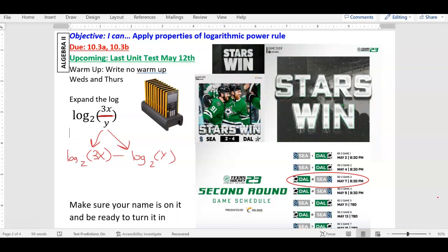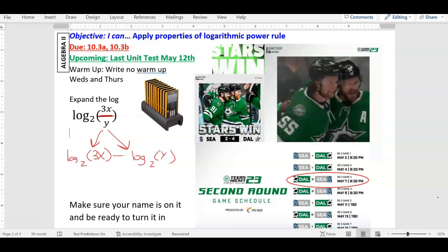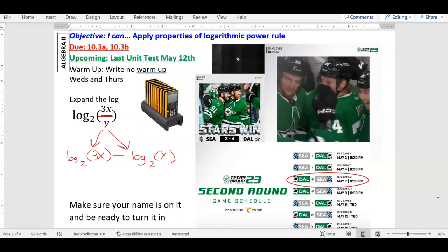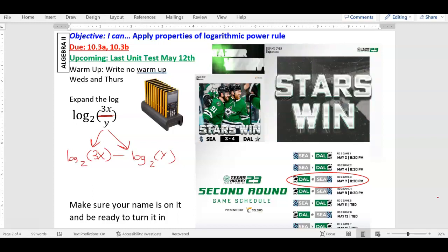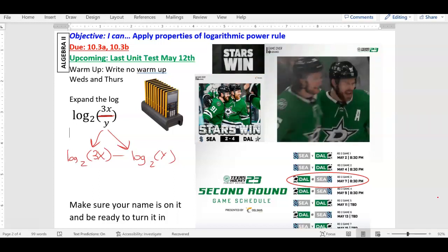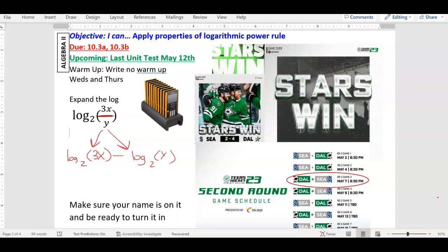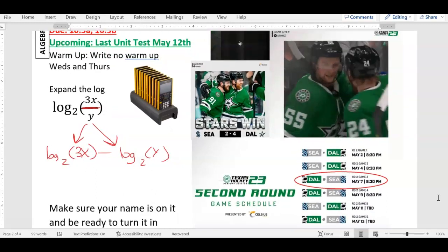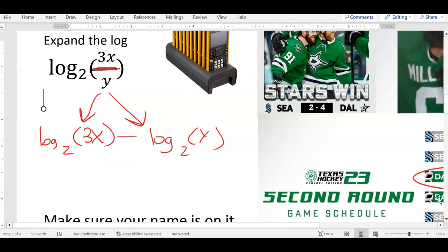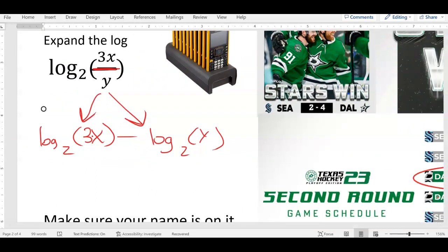So you got the top minus the bottom. However, do y'all see right here that we have 3x? If you have 3x, what's happening between the 3 and the x? That really means 3 times x and we can still split that up even more.